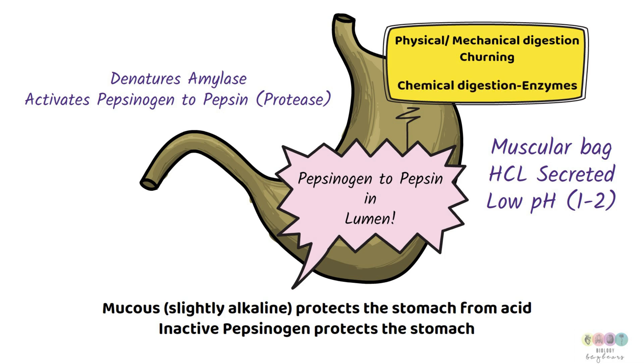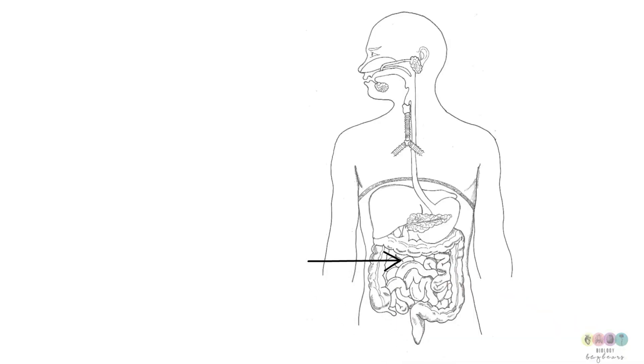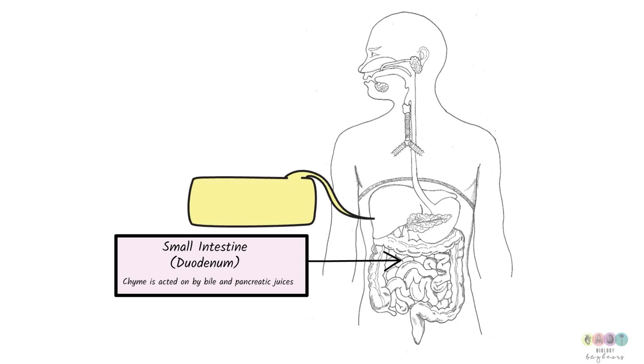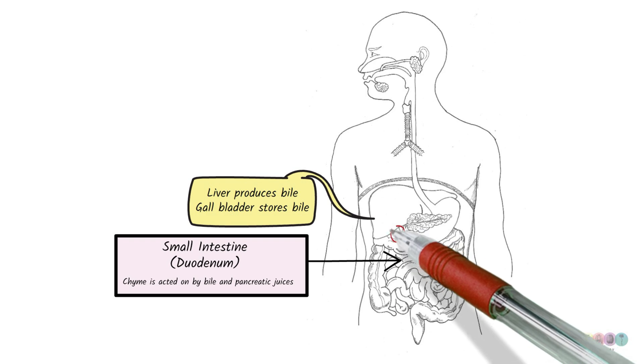In the stomach there is both mechanical and chemical digestion. When the pyloric sphincter muscle relaxes, food leaves the stomach and enters the small intestine. The upper portion is the duodenum. And it's this substance called chyme which enters the small intestine. It's very acidic. And it's acted on immediately by bile and pancreatic juices.